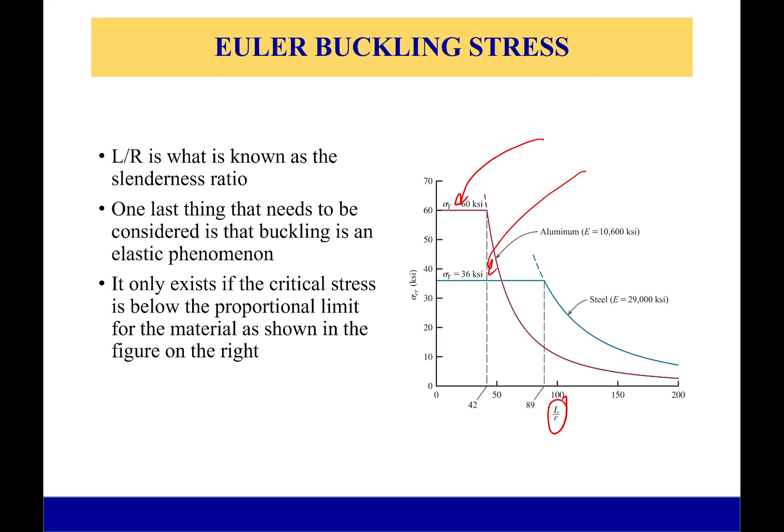It will only happen if the critical stress is below the proportional limit. Right here, this is for steel in blue and aluminum in red. I can see the yield stress for those two—that's where I go from elastic to plastic deformation. For slenderness ratios below 42 for aluminum or below 89 for steel, I will not see buckling.